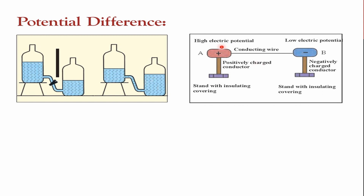Electricity has two charges: positive charges and negative charges. When connected by a conducting wire, charge flows from positive to negative — that is, from high electric potential to low electric potential. From this diagram we understand how potential difference works.